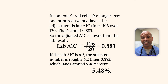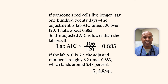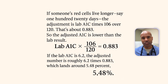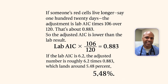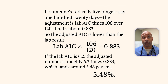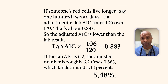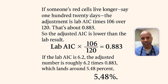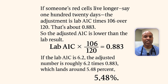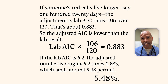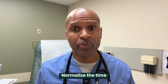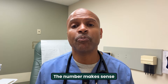Let's make it real with two quick examples. If someone's red cells live longer — say 120 days — the adjustment is lab A1C times 106 over 120. That's about 0.883, so the adjusted A1C is lower than the lab result. If the lab A1C is 6.2%, the adjusted number is roughly 6.2 times 0.883, which lands around 5.48%. Same glucose exposure, more time for glycation — normalize the time and the number makes sense.